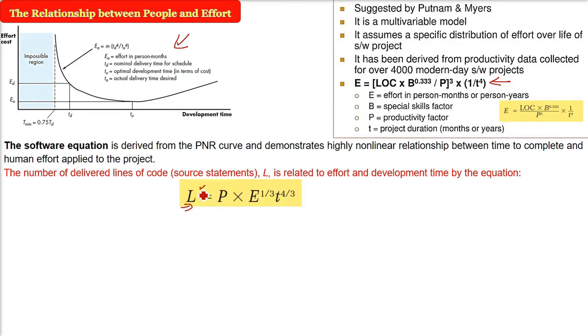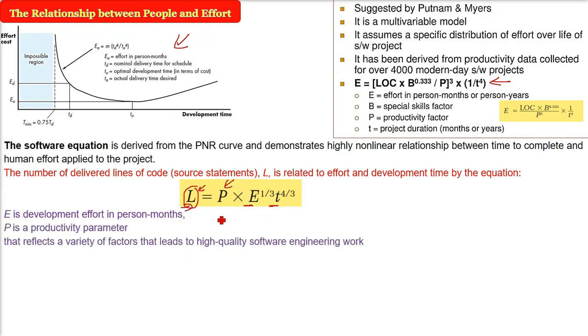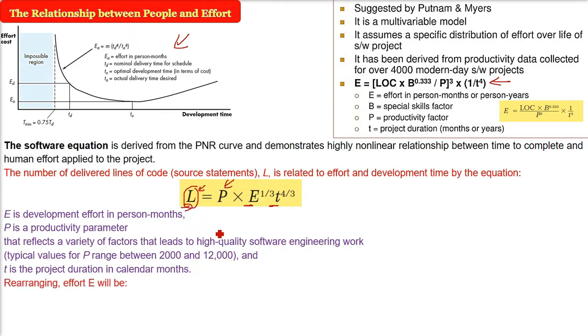Now L is the lines of code, effort, how they are related, let us see. E, as I said, E is the development effort in person months. P is the productivity parameter. This P is a specific value that reflects a variety of factors that lead to high quality software engineering work. This P may range from 2000 to 12,000 depending on the type of project you are undertaking.